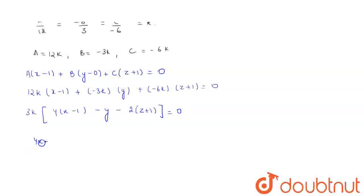So 4x minus 4 minus y minus 2z minus 2 equals to 0. So the final equation is 4x minus y minus 2z minus 6 equals to 0.